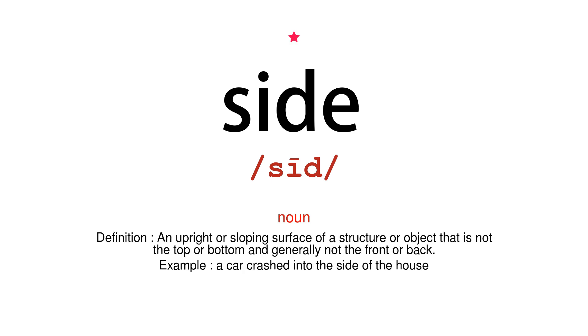Noun. Definition: an upright or sloping surface of a structure or object that is not the top or bottom and generally not the front or back. Example: a car crashed into the side of the house.